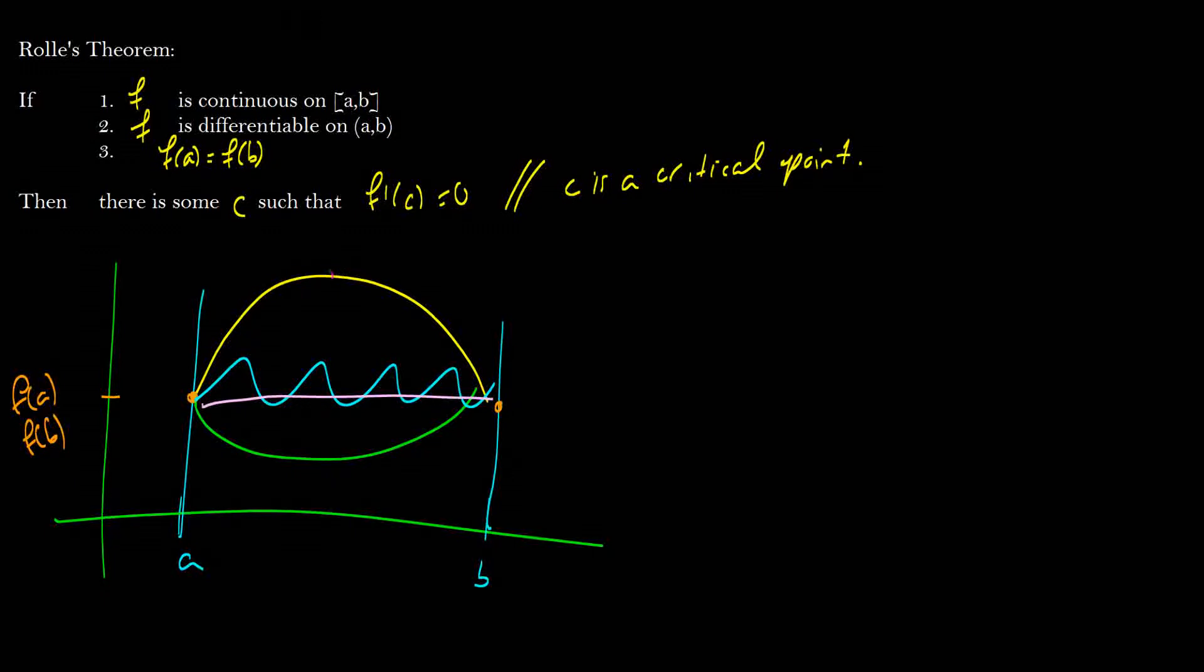So in this case, we have a local max here, local minimum here, we have a bunch of different maximums and minimums on this graph, and in the straight graph, well the whole thing, the derivative is zero. The derivative is zero in every single point on a flat graph. So that is Rolle's theorem.